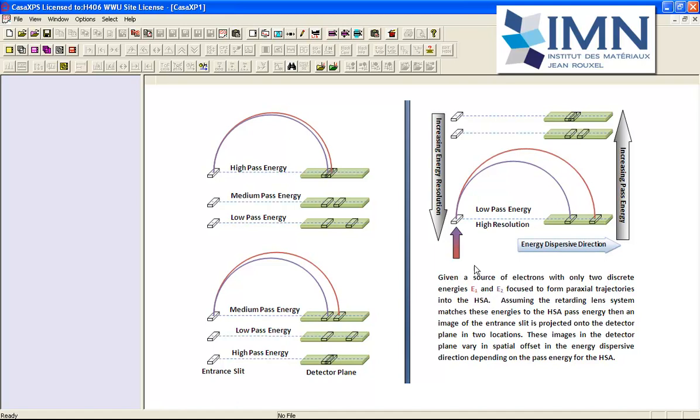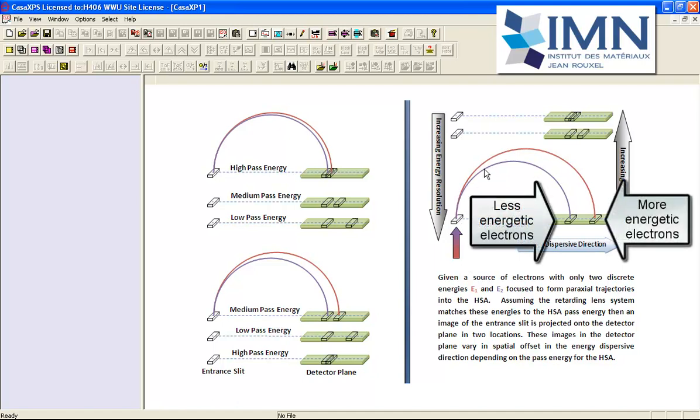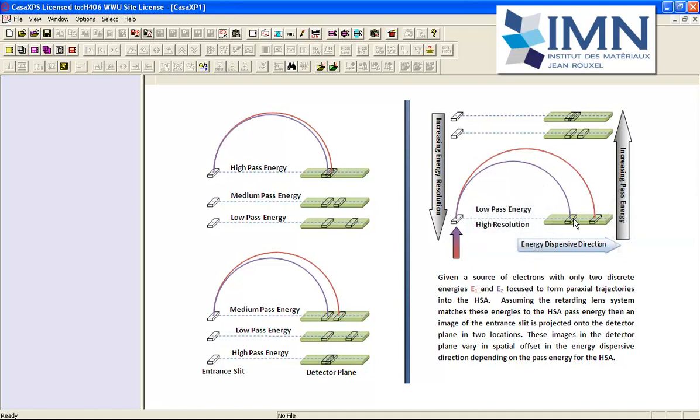Then electrons will be bent by the hemispherical analyzer and an image of the entrance slit is formed in the detector plane depending on the energy of the electrons. The separation of these images depends on the pass energy.